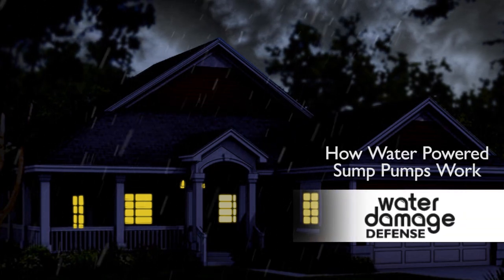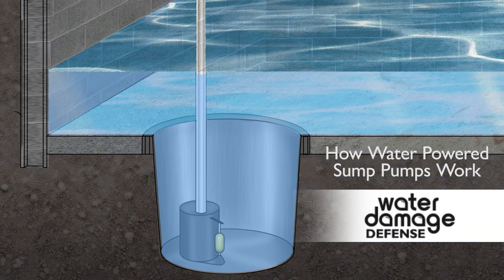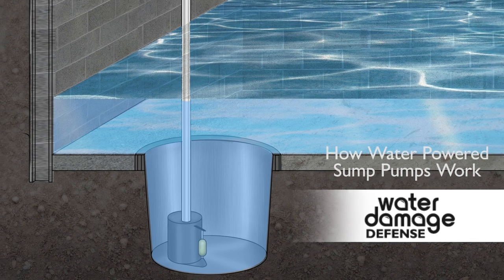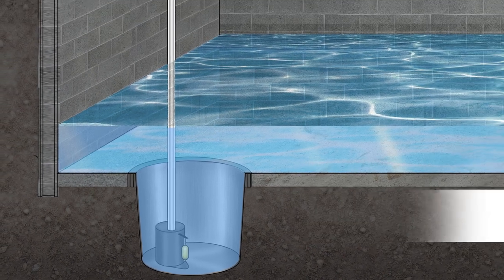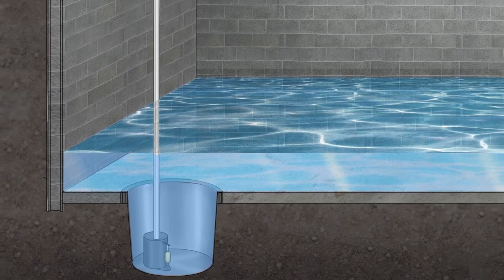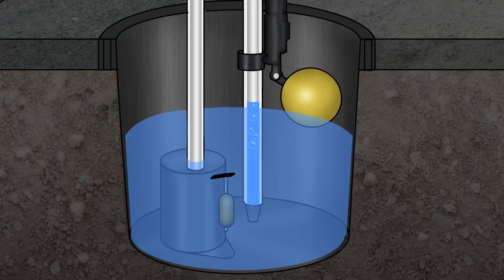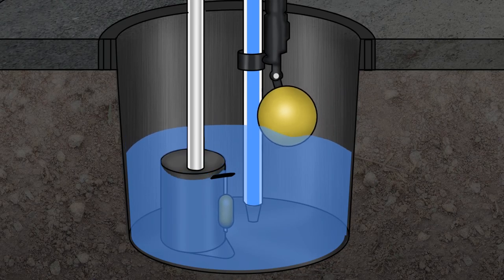Water-powered sump pumps protect your basement from flooding. If your main sump pump fails or if the power goes out so that your main sump pump can't turn on, the water-powered pump takes over to pump water out of your sump pit.